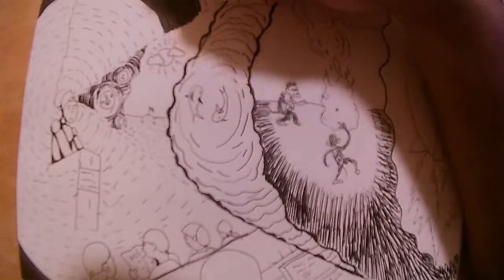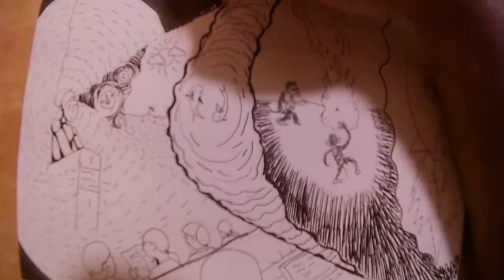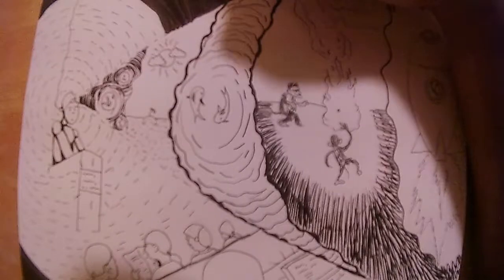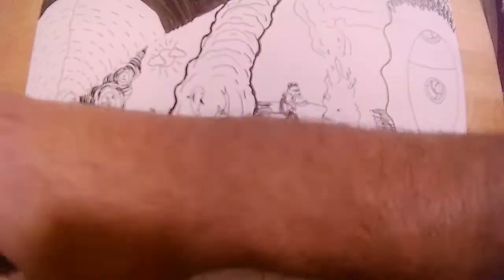In science you must not talk before you know. In art you must not talk before you do. In literature you must not talk before you think. This is something said by John Ruskin in The Eagle's Nest in 1872.